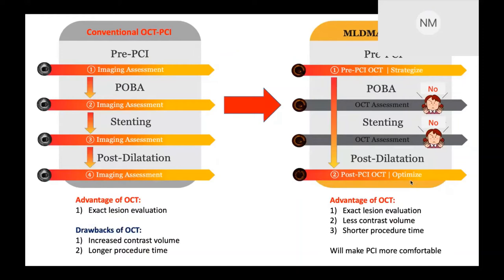Of course, the advantage of OCT is to evaluate exact lesion morphology, but there are still some drawbacks: increasing contrast volume and longer procedure time. Now I would like to propose the MLD Max 2 algorithm. This algorithm doesn't require several OCT pullbacks — it will make PCI more comfortable with a smaller amount of contrast volume and shorter procedure time.